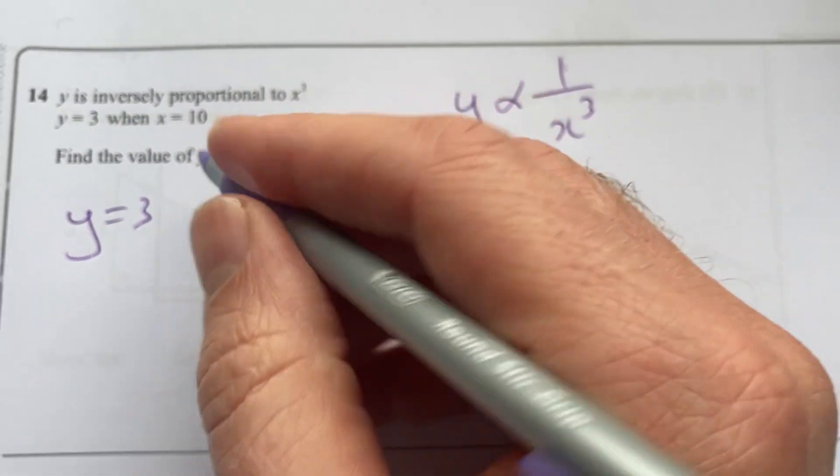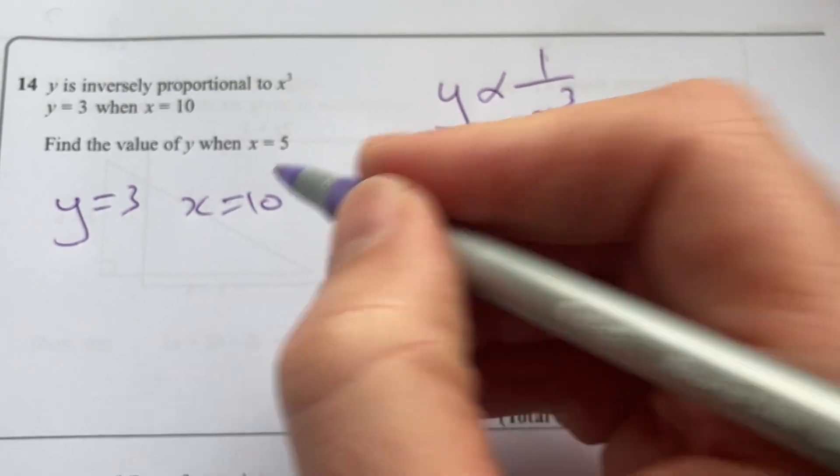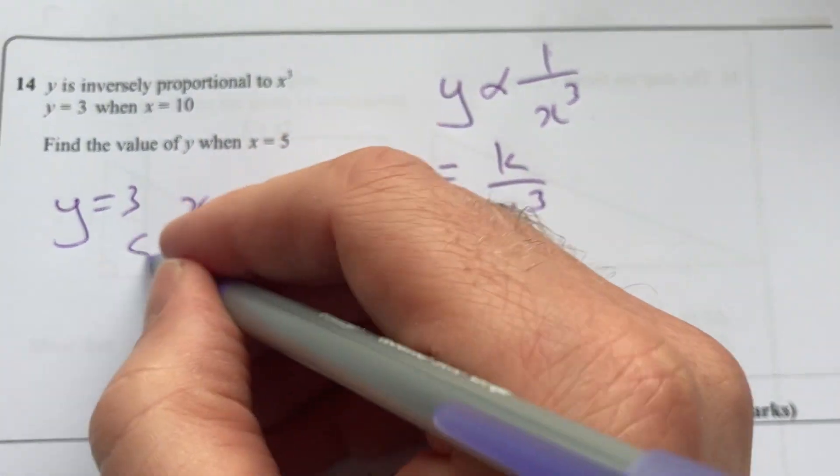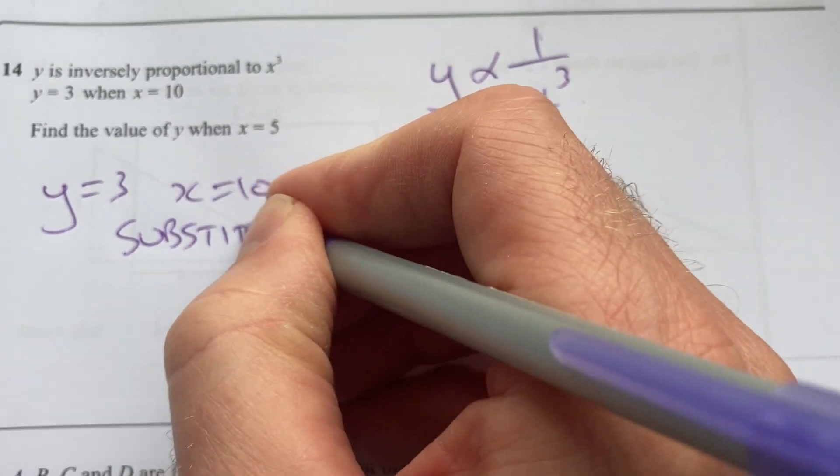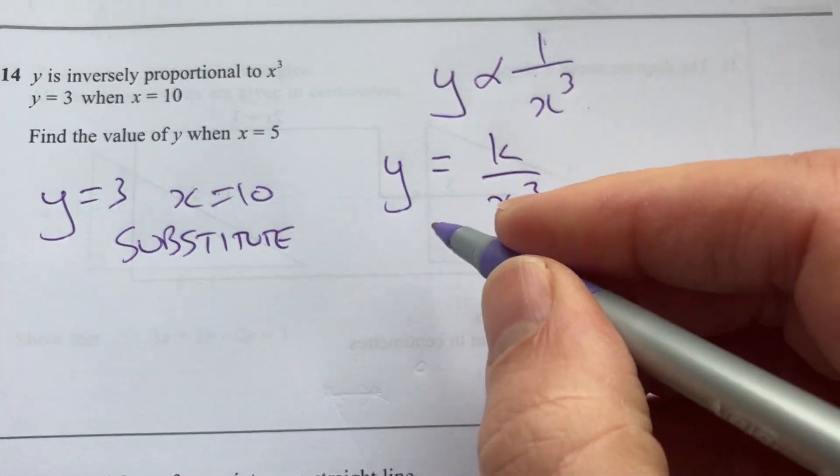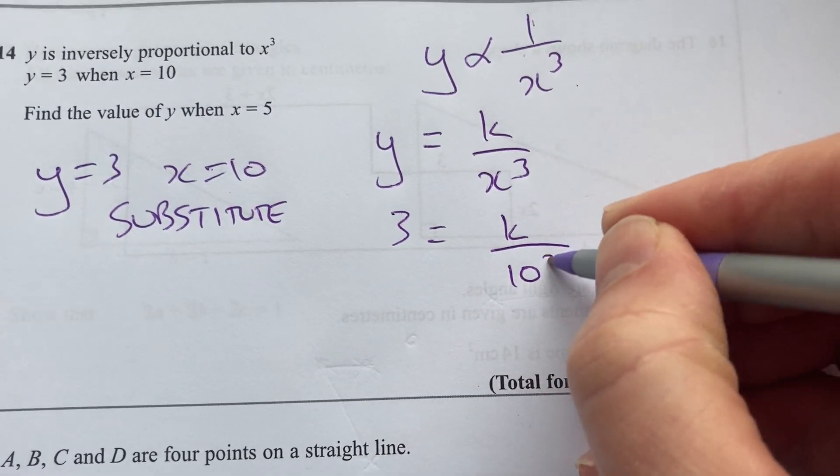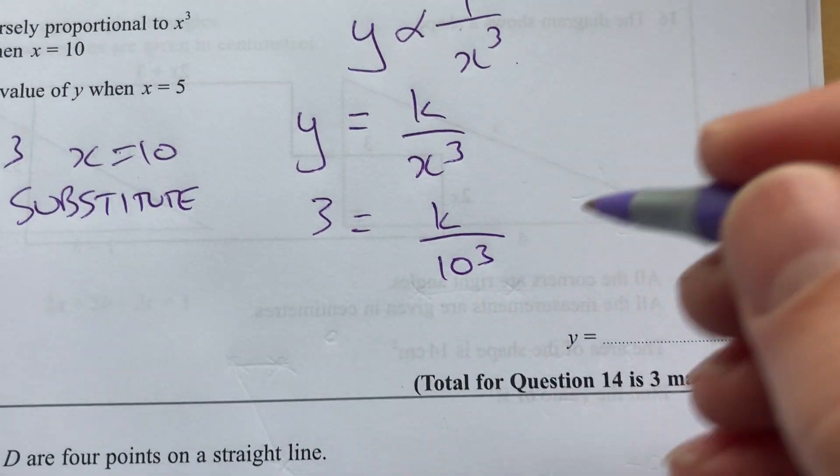So I can use substitution here. And say that 3 equals k over 10 cubed. Solve for k. k will equal 3000.